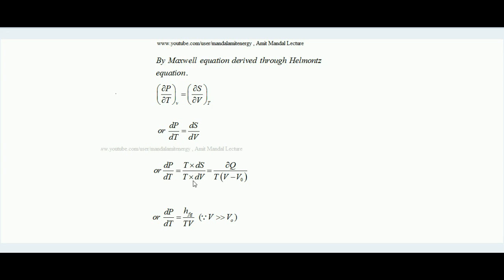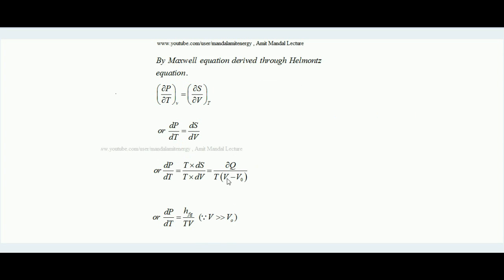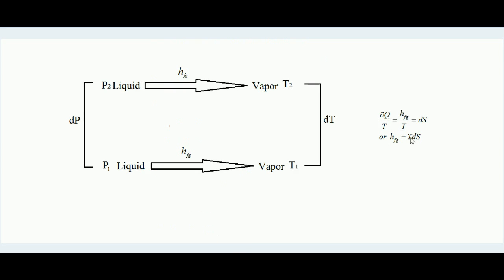Multiplying T over the numerator and denominator on the RHS gives T·dS / (T·dV). On the LHS it remains dP/dT. Since T·dS equals dQ, and for phase change dQ equals HFG, and dV is the change in volume — which equals Vg (specific volume of vapor) minus Vf (specific volume of liquid) — substituting gives: dP/dT = HFG / (T · (Vg - Vf)).